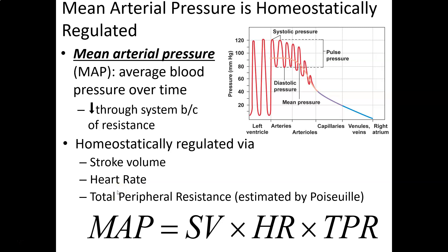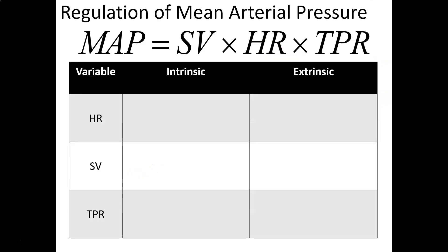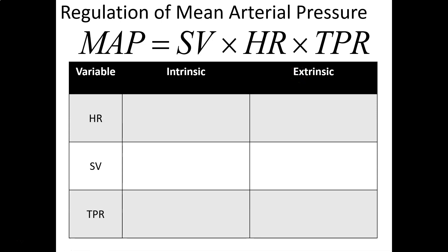We'll look at each one of these variables — stroke volume, heart rate, and total peripheral resistance — and see how those help to control mean arterial pressure homeostatically. We'll fill in each one and look at the intrinsic factors that help control it and the extrinsic factors. Intrinsic would involve auto-regulation from the organ or system itself; extrinsic would come from hormones, the ANS, and other processes.